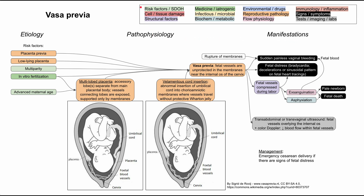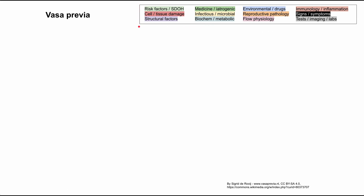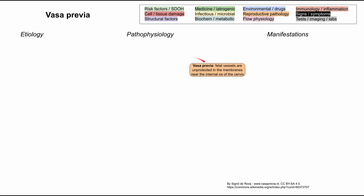As in all of these flowcharts, each of the boxes is color-coded according to the legend in the top right. Vasa previa is when the fetal vessels are unprotected in the membranes near the internal os of the cervix.